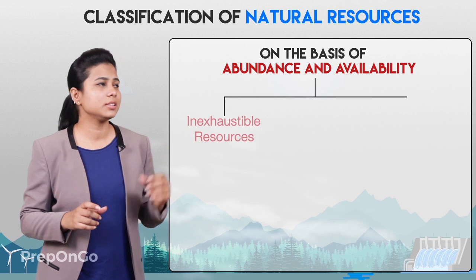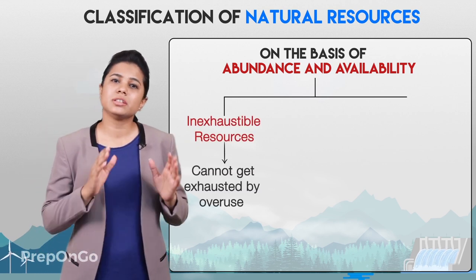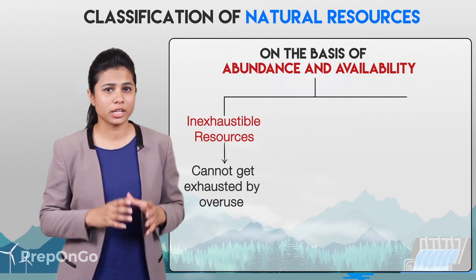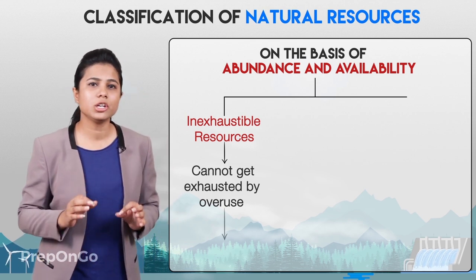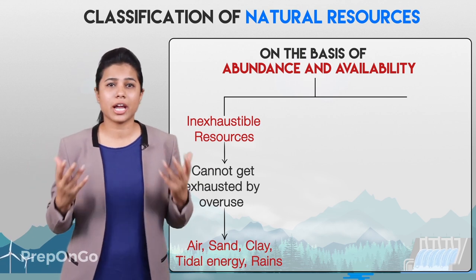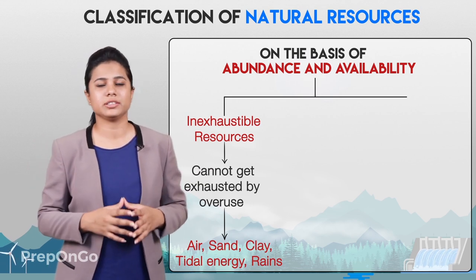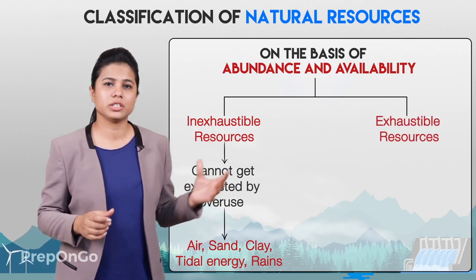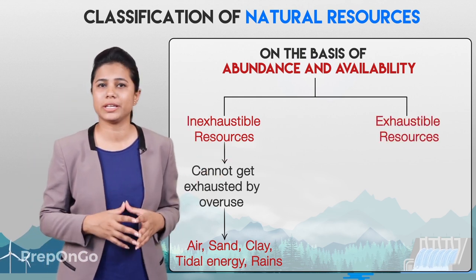The first type is inexhaustible resources, which are present in abundance and cannot get exhausted or overused by humans. These include air, sand, clay, tidal energy, and rain. The second type is exhaustible resources, which can get exhausted or overused by humans.